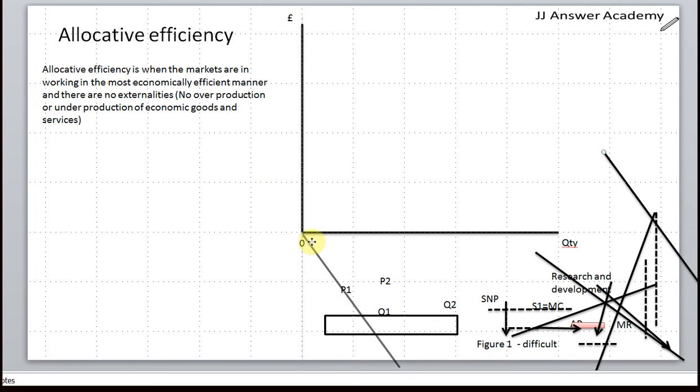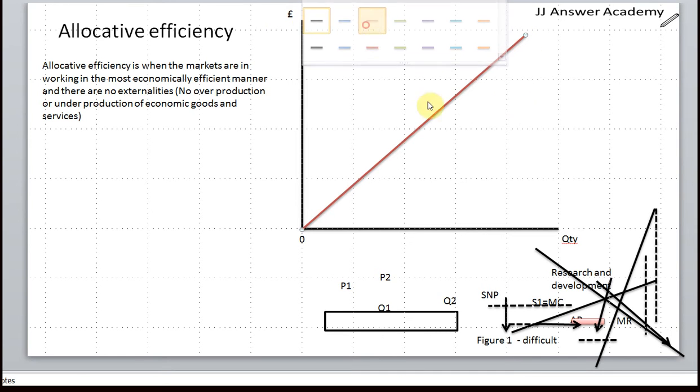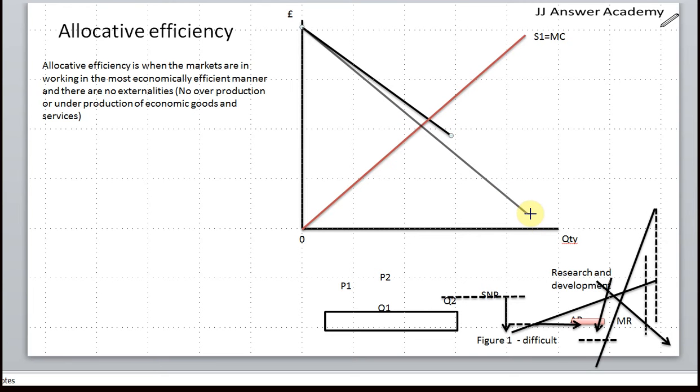So we can present this diagrammatically. We've got our supply curve, let me make that red and label that as S1 SMC, and then we've got the demand curve.